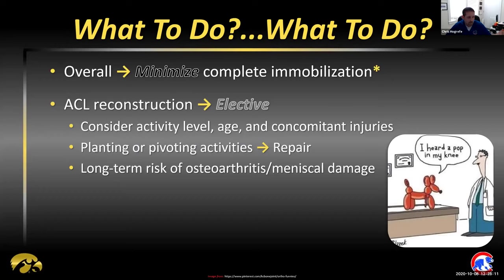For ACL reconstructions, our first inclination is to think these all need to be reconstructed — that actually isn't the case. It's an elective surgery, and young active people involved in planting and pivoting activities are likely to get them repaired, but it's not an absolute necessity. There are people engaged in significant activities who are ACL deficient, so you at least have to have that conversation with patients. There is some variable long-term risk of osteoarthritis and meniscal damage without an ACL, particularly if you continue planting and pivoting activities.